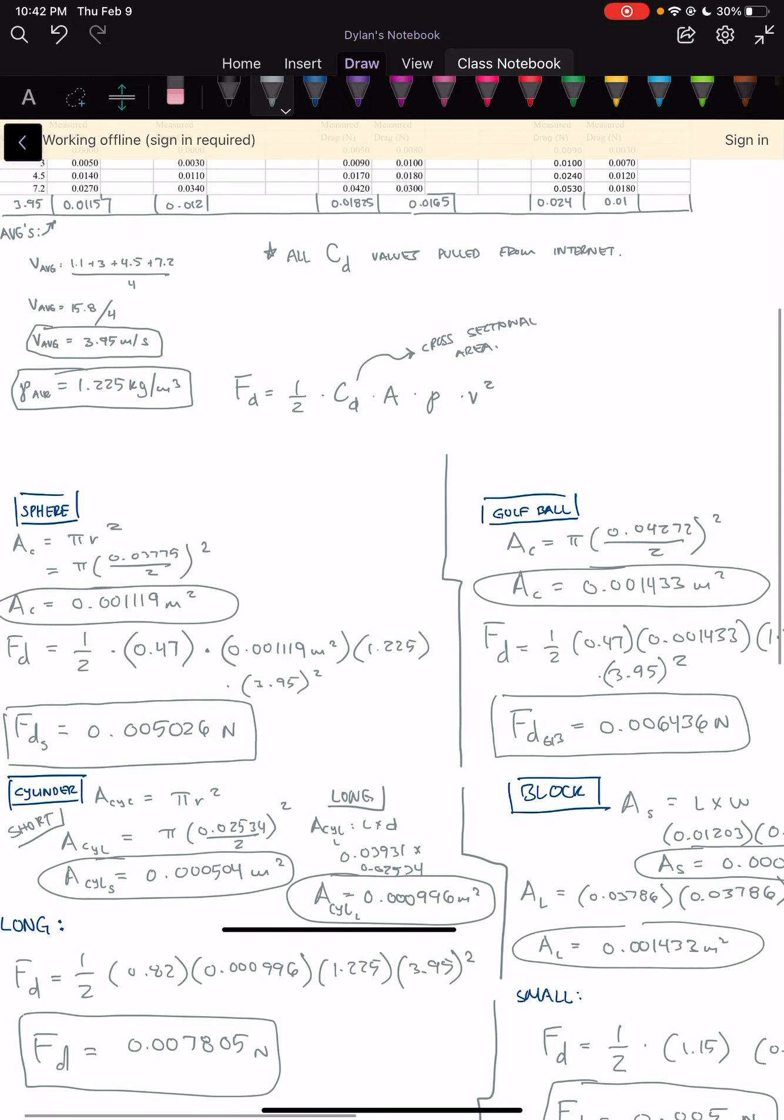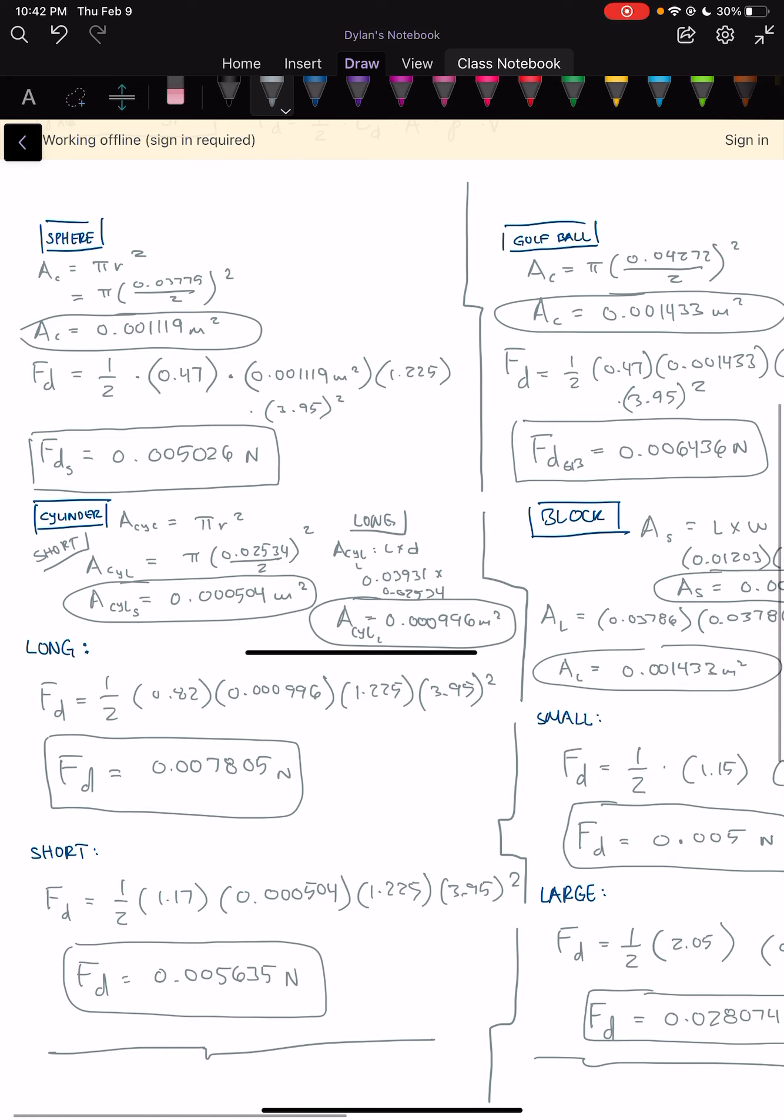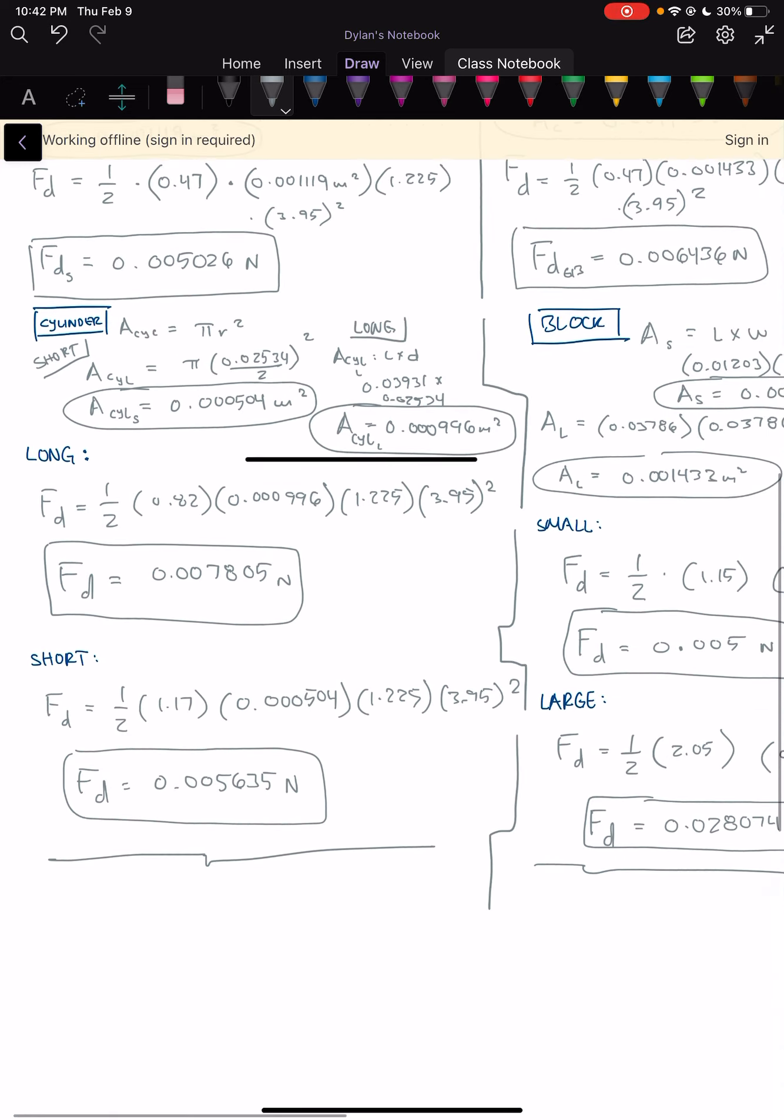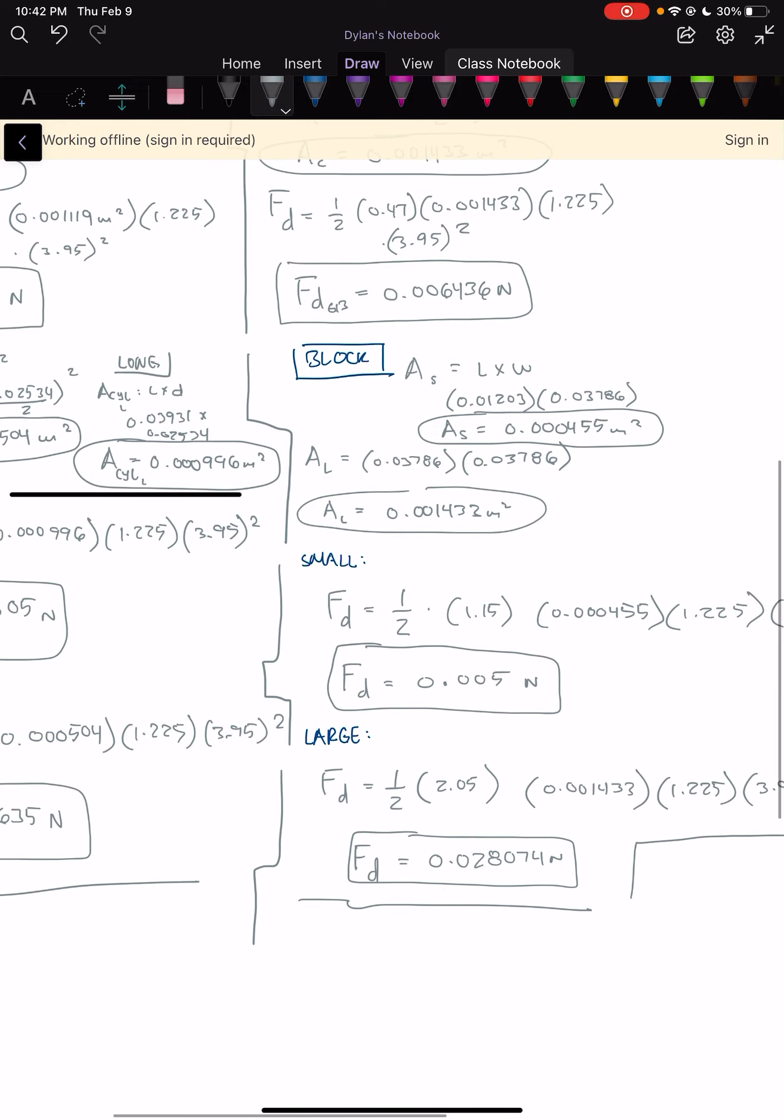And then the force of drag equation is one half times the coefficient of drag times the cross sectional area of the object times air density times velocity squared. So these are all of my calculations for the sphere. You can see the cylinder, the long and short end, the golf ball, the block, small and large face.